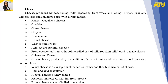Cheese is produced by coagulating milk, separating from the whey, and letting it ripen, generally with bacteria and sometimes also with certain molds. Types of cheese include cheddar, grana cheeses, gruyère, blue cheese, brine cheese, washed-rind cheese, and acid or sour milk cheeses, among others.